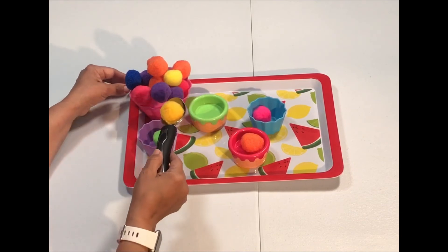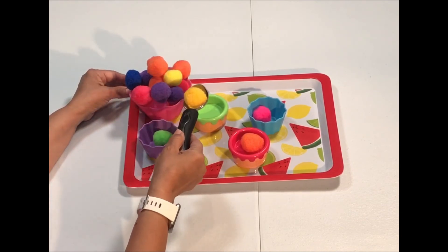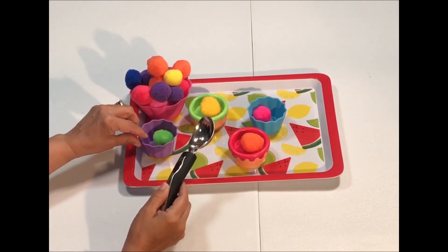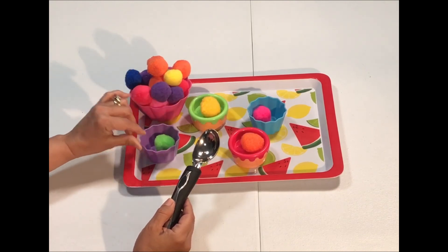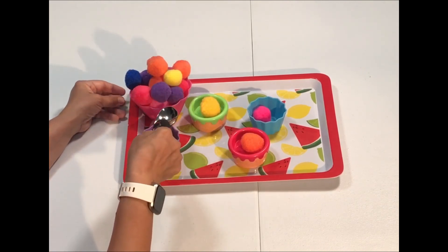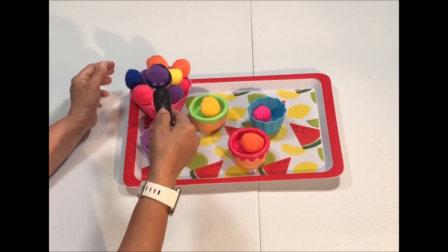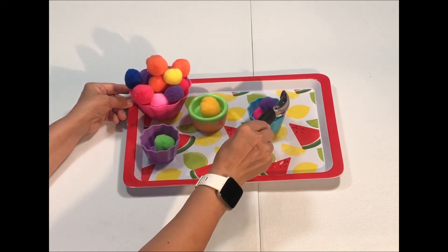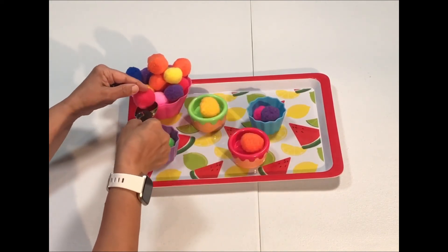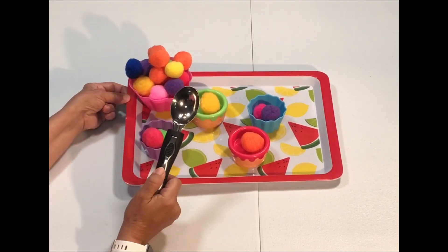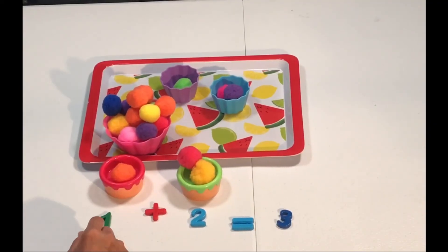For this activity, we're going to make some ice cream sundaes. We're using some little toys we already had, an ice cream scoop and we're using some pom-poms and we're just going to have fun dipping ice cream.